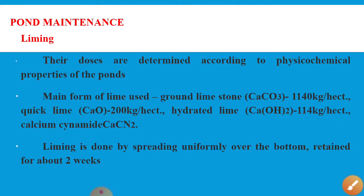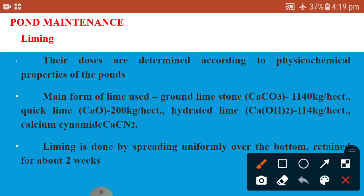Different types of limes are used in different doses, determined according to the physical, chemical, and biological properties of the pond. The main forms of lime used include: ground limestone (CaCO₃), quick lime (CaO), hydrated lime (Ca(OH)₂), and calcium cyanamide. Liming is done by spreading the lime uniformly over the pond bottom.